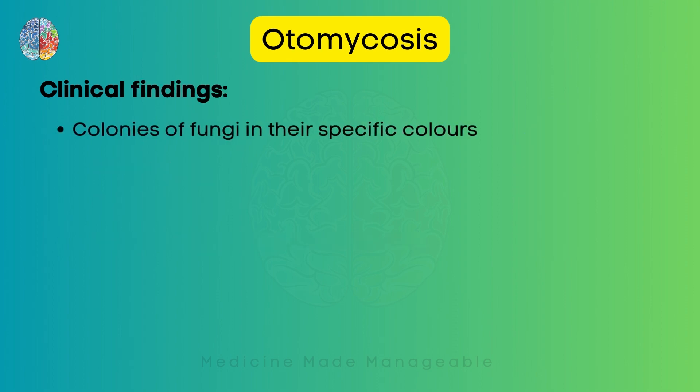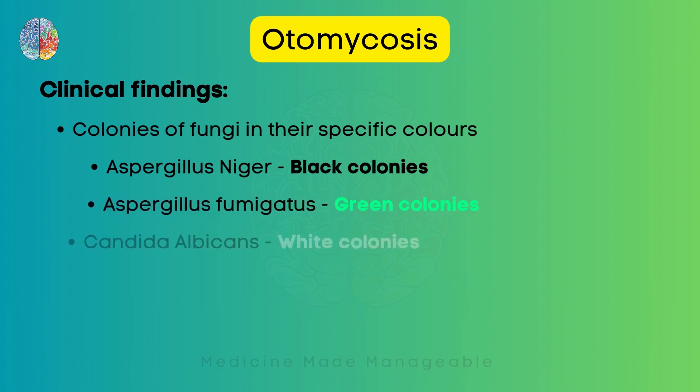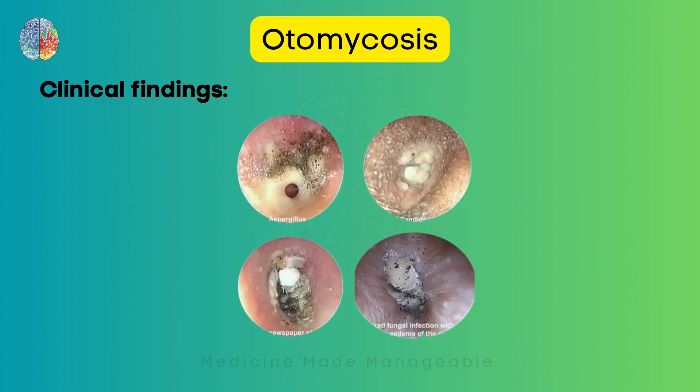In clinical findings, the fungal colonies appear in specific colors. An Aspergillus niger infection produces black colonies, Aspergillus fumigatus produces green colonies, and Candida albicans produces white colonies.